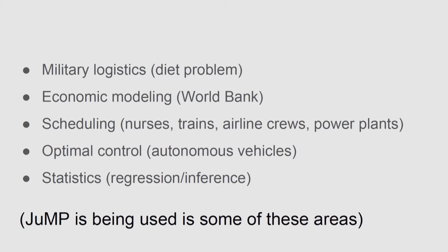On a 24-hour period, you have to decide how much each power plant produces, whether to turn a power plant on and off. Because the system has such a large scale, even saving 1% in production costs is easily millions of dollars over a short period of time, so it's worth putting in the effort to optimize these things. Optimal control and autonomous vehicles are also areas where you solve these sorts of optimization problems inside a control system. Statistics, regression, and inference problems are areas where optimization problems typically come up, and JuMP is actually being used already in some of these application areas.